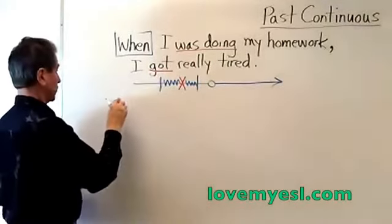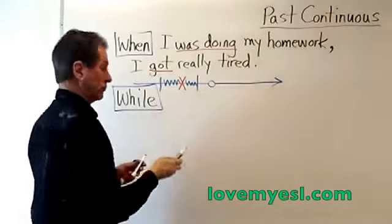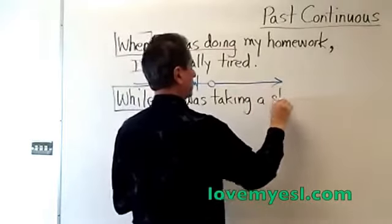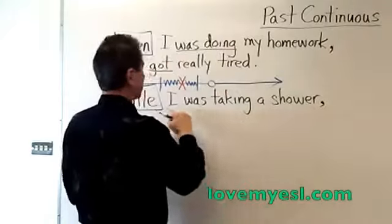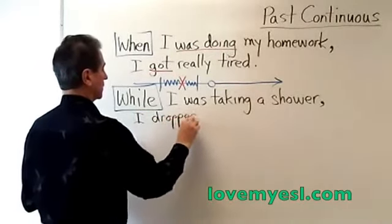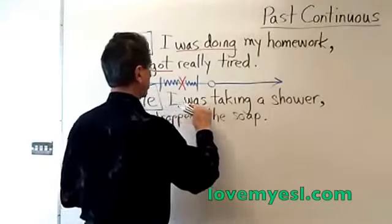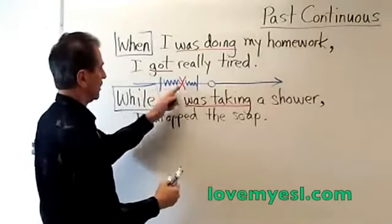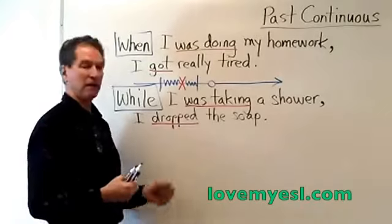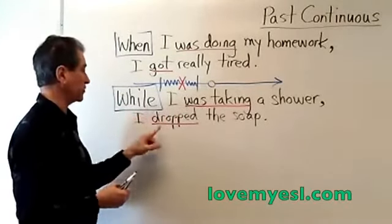The next word is 'while' — W-H-I-L-E. While I was taking a shower — again, I have my dependent clause first in the sentence, so I'm going to put a comma there. While I was taking a shower, I dropped the soap. We have 'was taking' — that's the past continuous, the long action. I was taking a shower, and then I dropped the soap. 'Dropped' is the simple past. While is always used before the past continuous. You can't say 'while I dropped the soap' — you cannot use 'while' before a simple past.